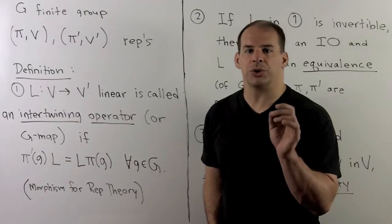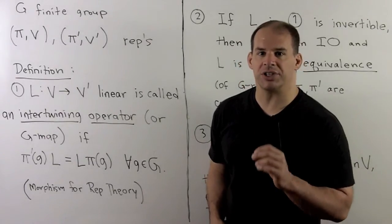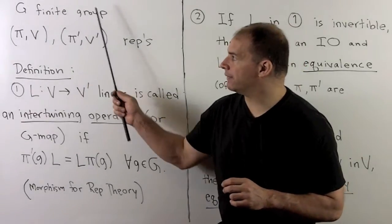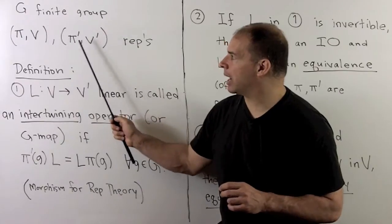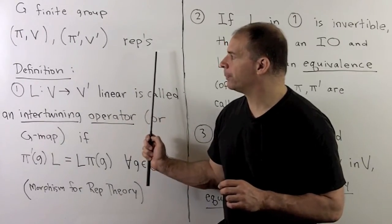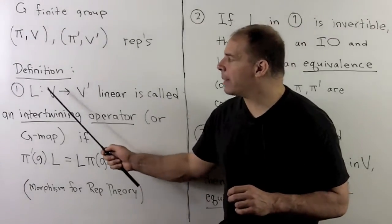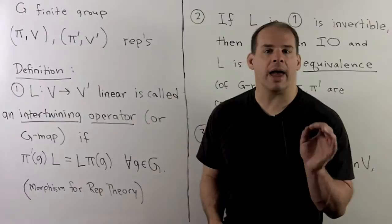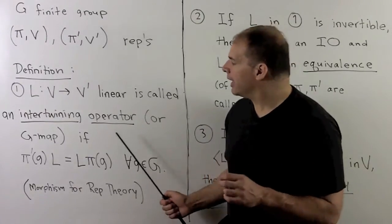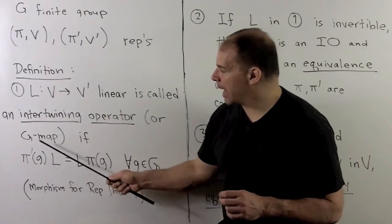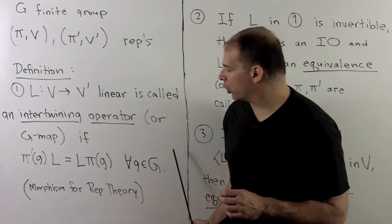For this section, we introduce the notion of equivalence of representations and give further examples. Recall we have G a finite group, with representations pi on V and pi prime on V prime, both finite dimensional. Definition: a linear map L carrying V to V prime is called an intertwining operator, or G-map, if L satisfies the equation: pi prime(g) times L equals L times pi(g) for all g in our group.